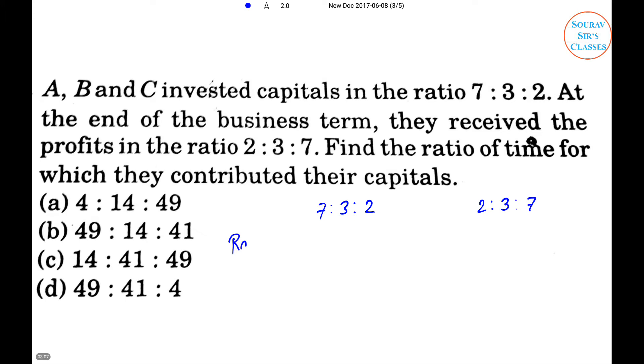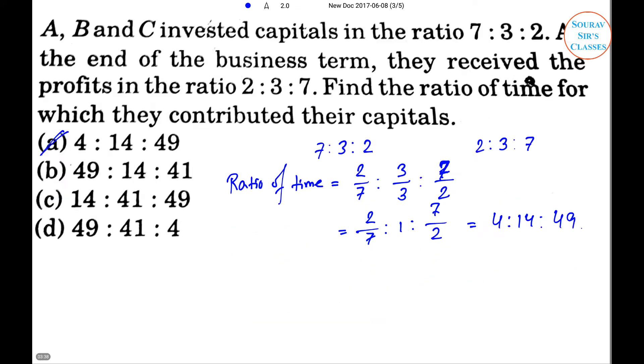So the ratio of time equals 2 by 7 is to 3 by 3 is to 7 by 2, which equals 2 by 7 is to 1 is to 7 by 2. That equals 4:14:49. So option A will be the right answer.